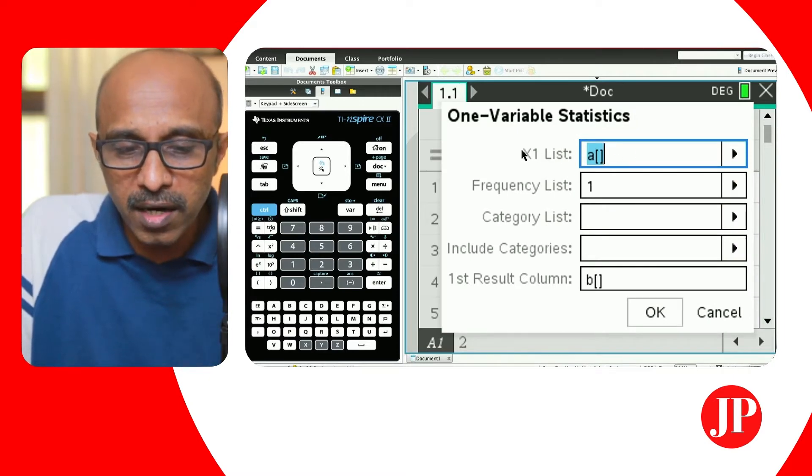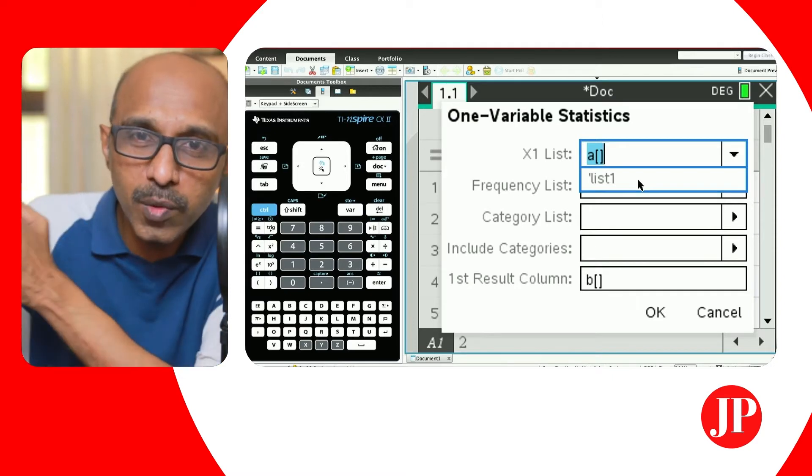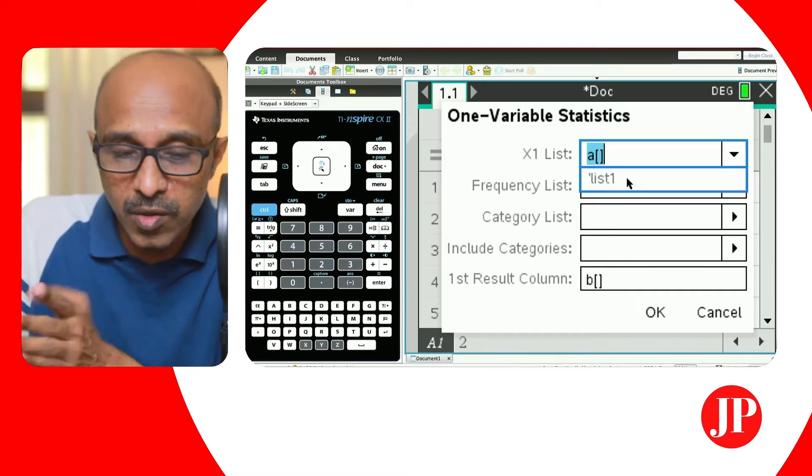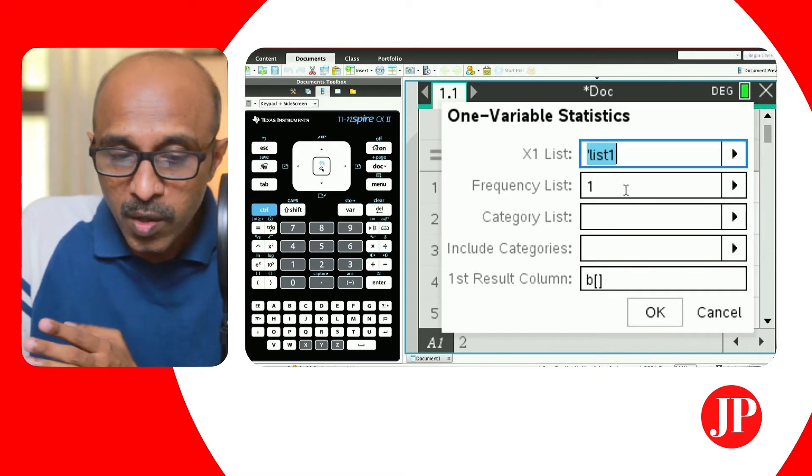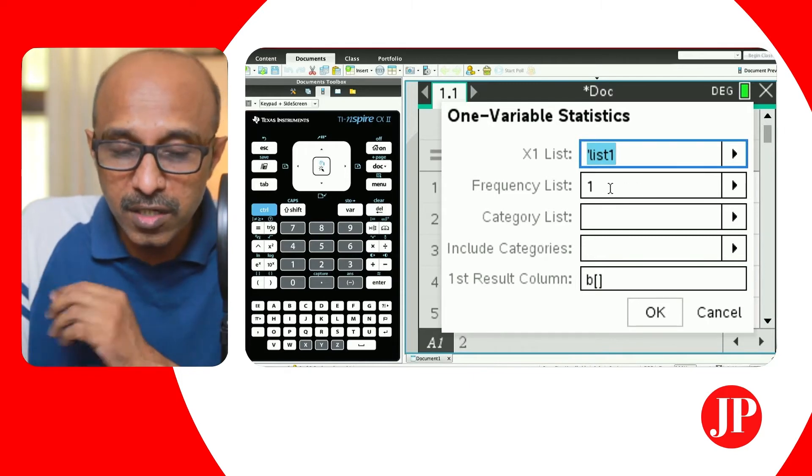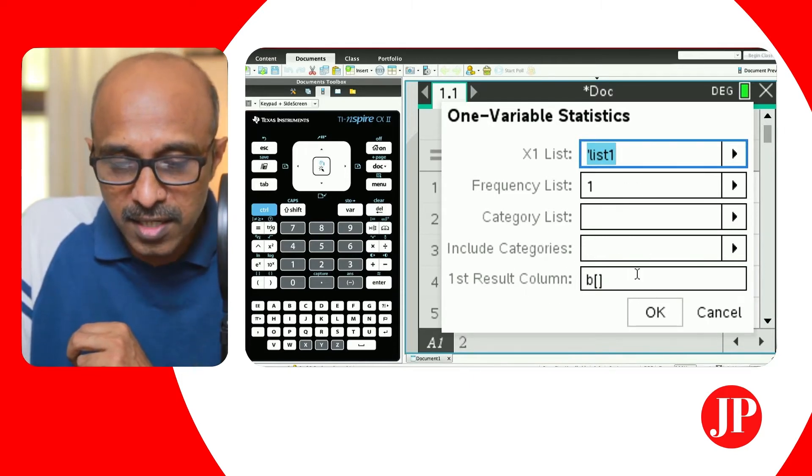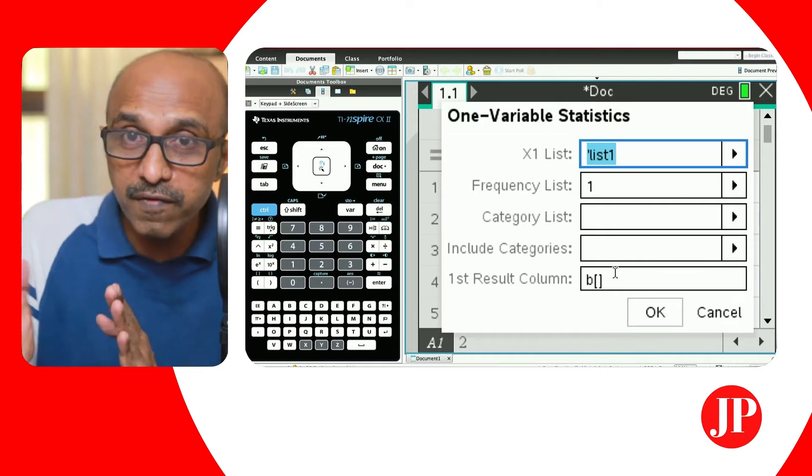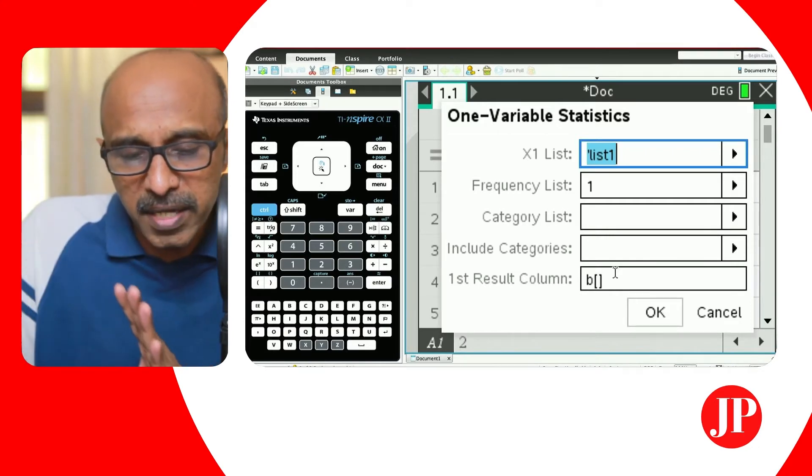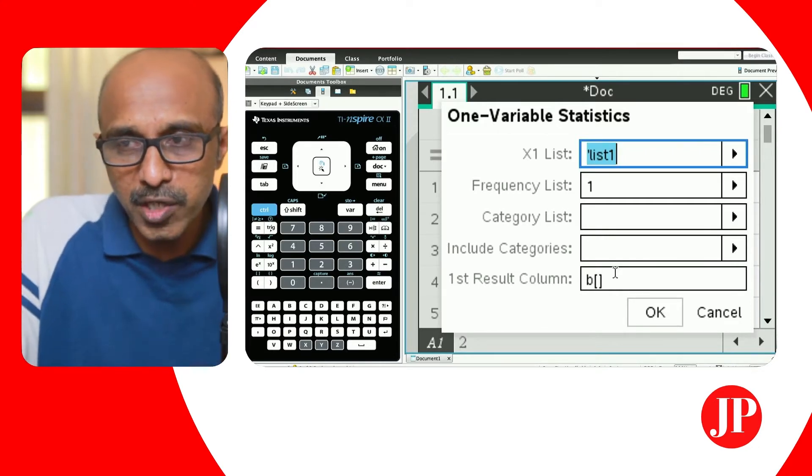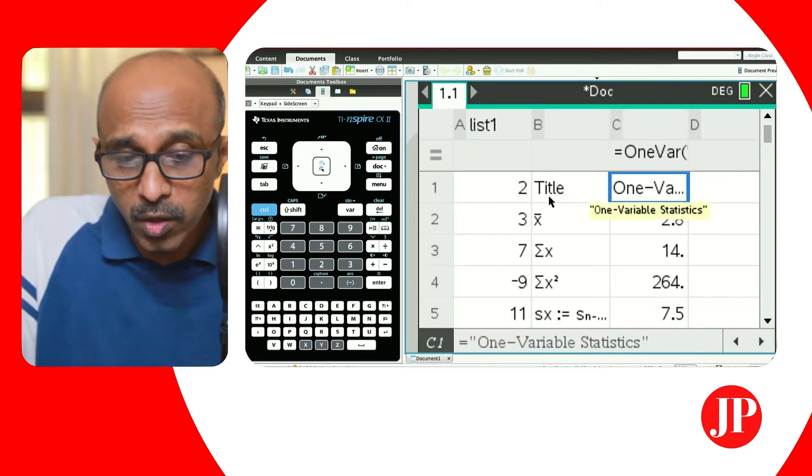So number of lists, we have only one list. We've just created one list and we're doing one variable statistics on one list only. And you say, okay. And here we got to take care. You've labeled X1 list. That's the first list. And sometimes if you have more than one list, you need to make sure which list it is. So we just have one list this time. List one. We don't have a frequency column. It's not a frequency distribution. The results. This is important where you want the results to start from. So it's going to display the results on the same list and spreadsheet. And so when I say, okay, there you go.